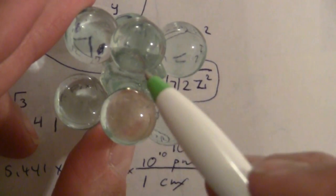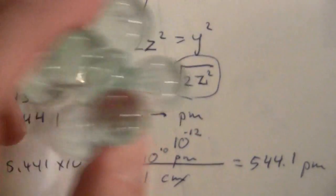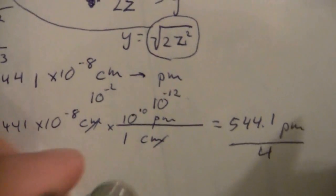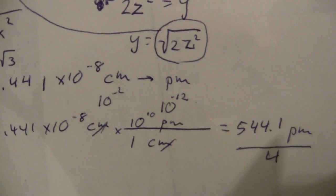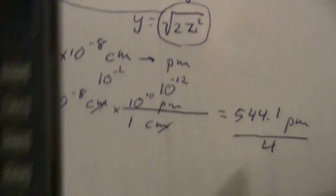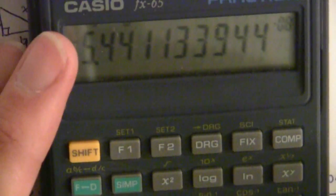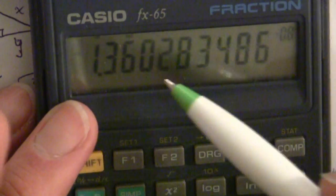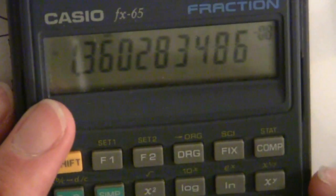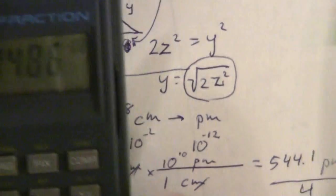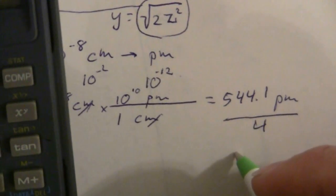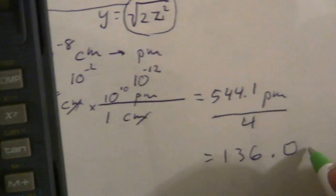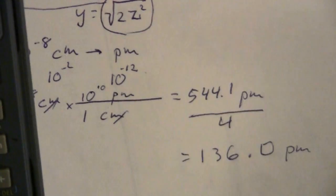So I have 1, 2, 3, 4 radii in that distance. So if I just take this, divide it by 4, I get the radius of molybdenum. So let me just take this value, divide it by 4, and that will be 136. Or 136.0 picometers.